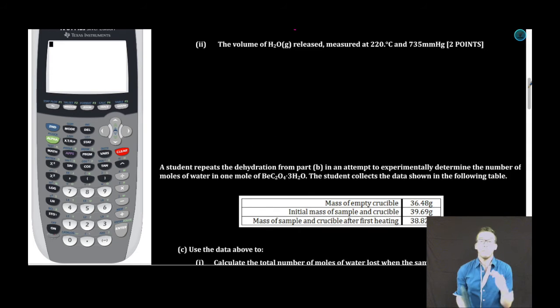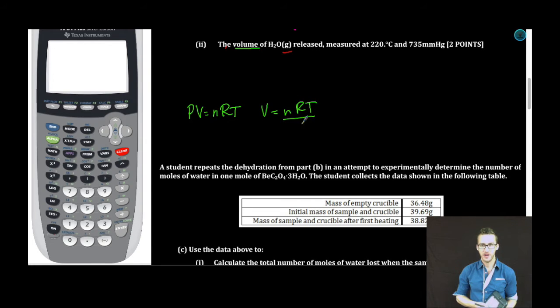Fun just keeps going. B part II. We're now asked to determine the volume of water released, measured at 220 degrees Celsius and 735 millimeters mercury. Anytime you're given things like volume, pressure, temperature, and we're talking about a gas, your mind should immediately be going to, you guessed it, PV=nRT. Good old, PV equals nRT. As you think about this, we're trying to solve for the volume of water vapor. And so, if I solve my equation for volume, this becomes volume equals nRT divided by P.